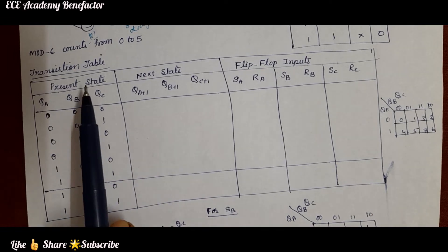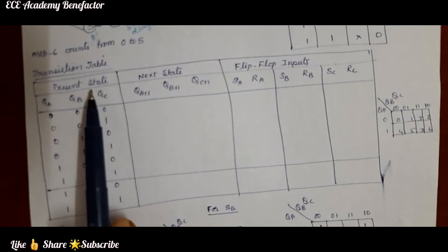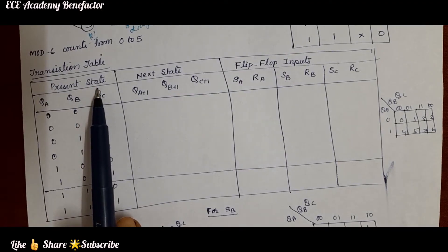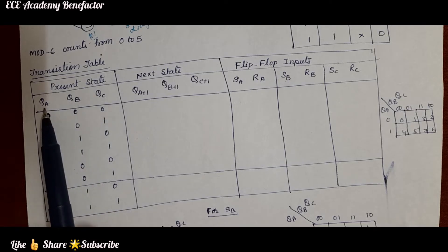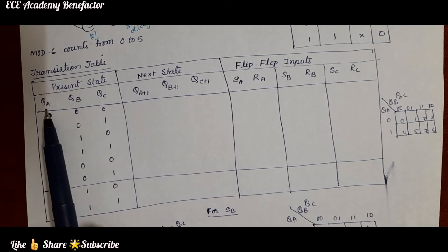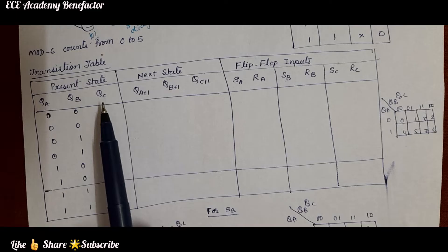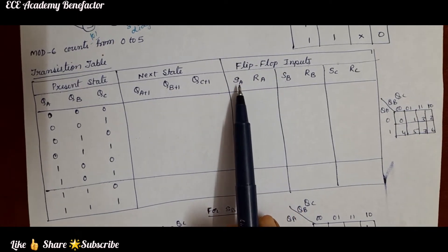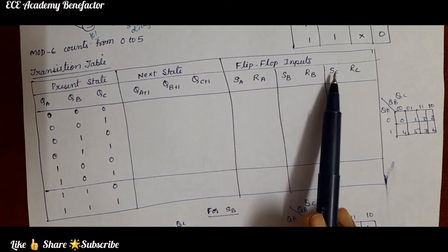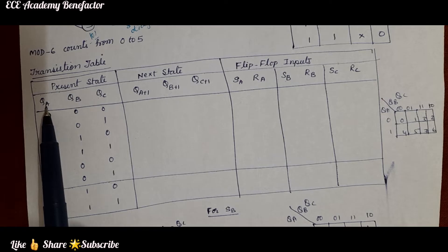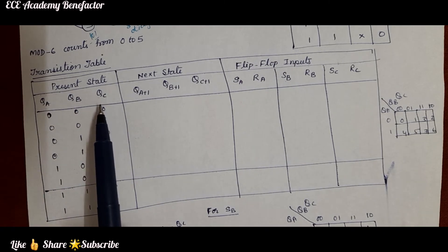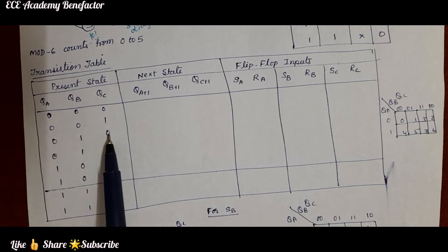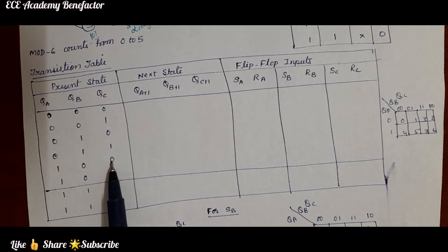The transition table comprises present state, next state, and flip-flop inputs. Present state means the flip-flop present output states. We need 3 flip-flops, so their outputs are QA, QB, QC. Next state columns are QA+1, QB+1, QC+1. Flip-flop inputs are SA, RA, SB, RB, SC, RC. The present state has 3 variables QA, QB, QC, so we write all 8 combinations: 000, 001, 010, 011, 100, 101, 110, 111 corresponding to decimals 0 through 7.